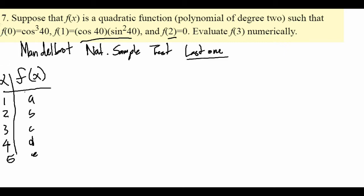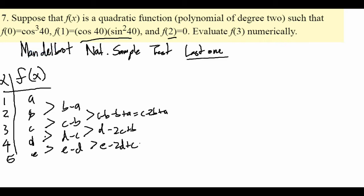And these are just f of 1, f of 2, f of 3, etc. Well, if you take this difference, this will be b minus a, this will be c minus b, this will be d minus c, and this will be e minus d. And then you take the difference again, this will be c minus b minus b plus a, which is c minus 2b plus a. Take the difference again, you'll get d minus 2c plus b, and e minus 2d plus c. The second difference is always constant.